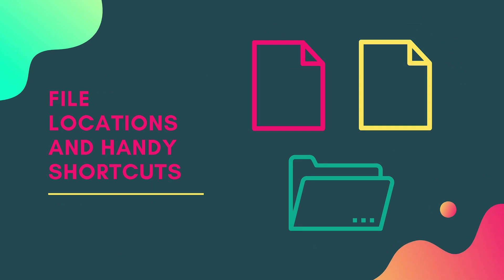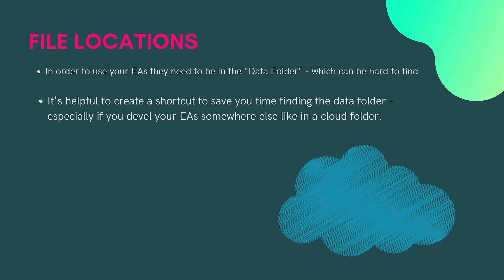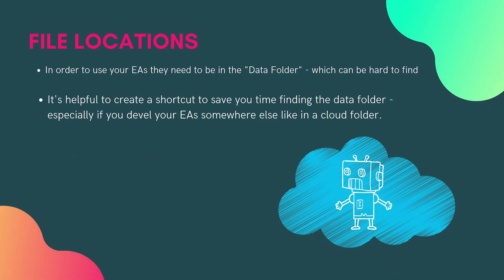MetaTrader 5 stores its files in a bit of a weird place, so you need to know how to find them. They are stored in what's called the data folder, which can be hard to find. It's helpful to create a shortcut to save you time, especially if you develop your EA somewhere else like a cloud folder — you want to be able to drop files in without spending lots of time searching.